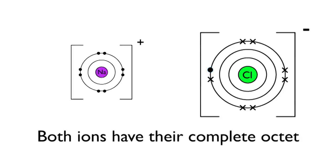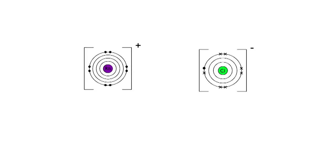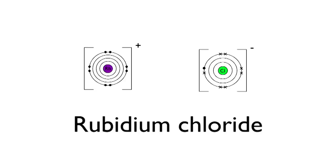But then along comes a rubidium atom. It's much higher in reactivity than the sodium, able to donate its outer shell electron much more easily and attracts the chloride far more. So the chemical reaction happens, the ionic compound becomes rubidium chloride, and the poor old sodium is kicked out and becomes a normal atom again. It has been displaced.